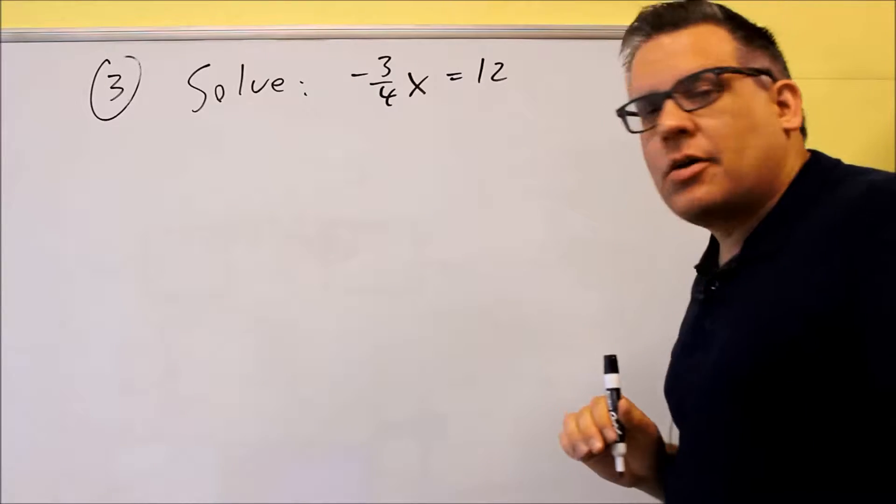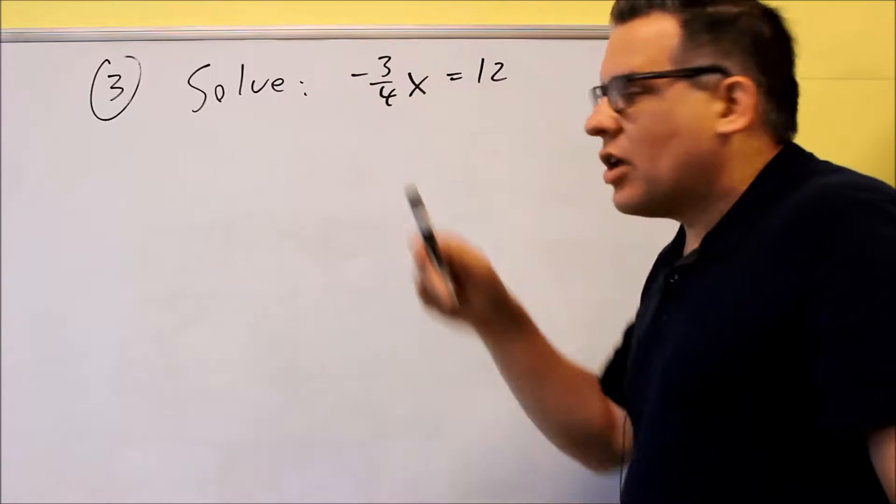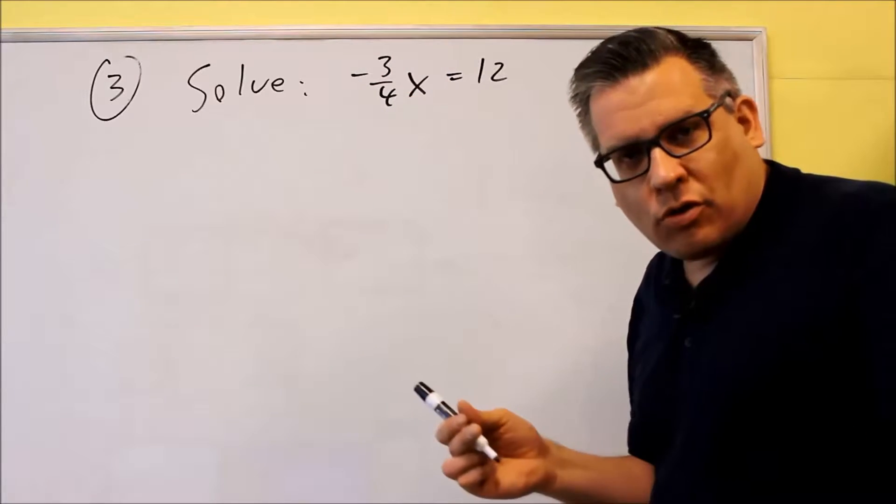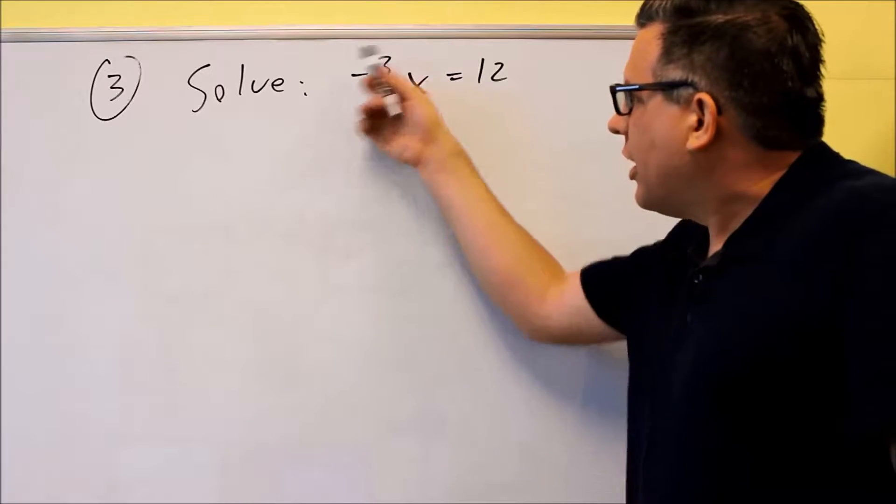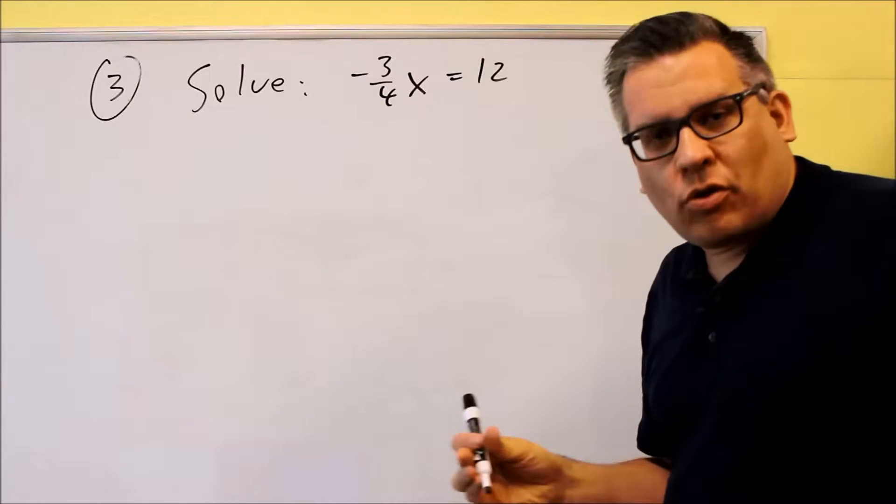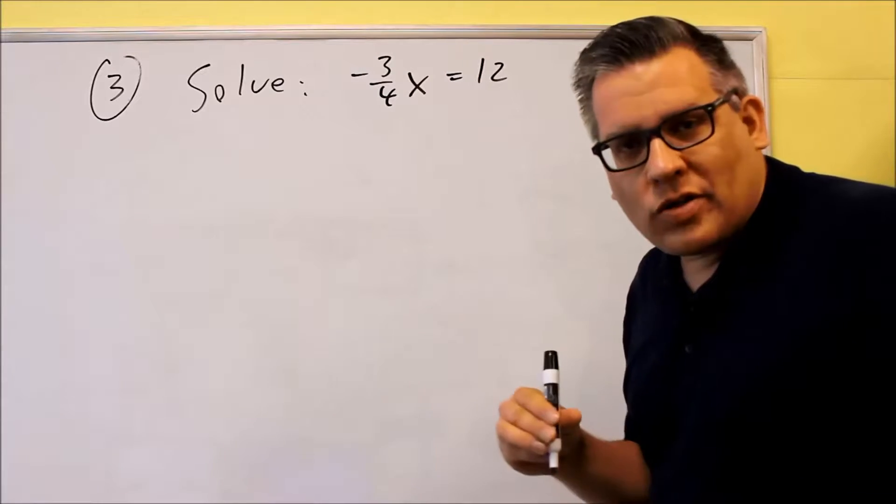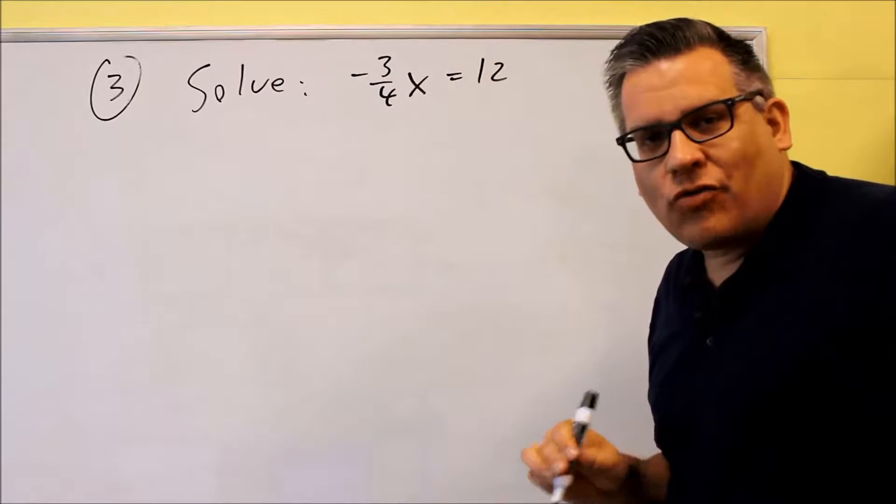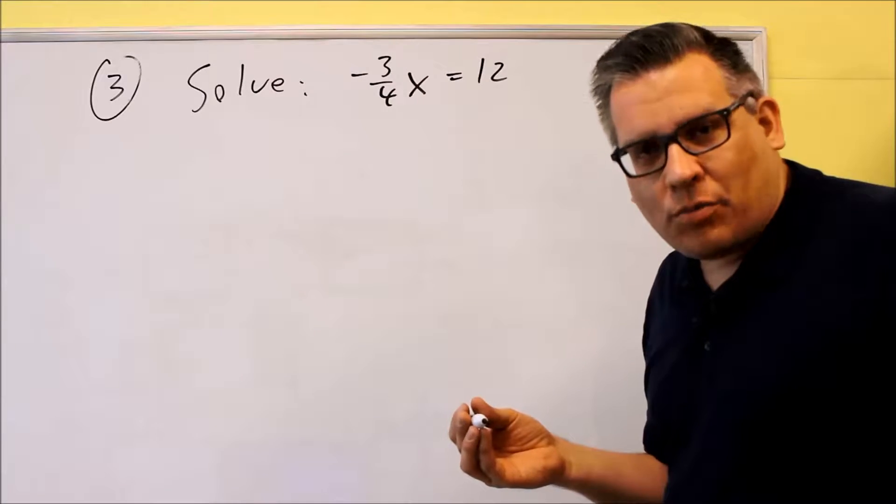We're going to multiply both sides by the reciprocal of this. The reason why we're going to multiply by the reciprocal is because if you multiply a fraction by its reciprocal, we're always going to get one as the answer, and that's the idea here. We want to get a one in front of the X, and then we know we've solved that problem.